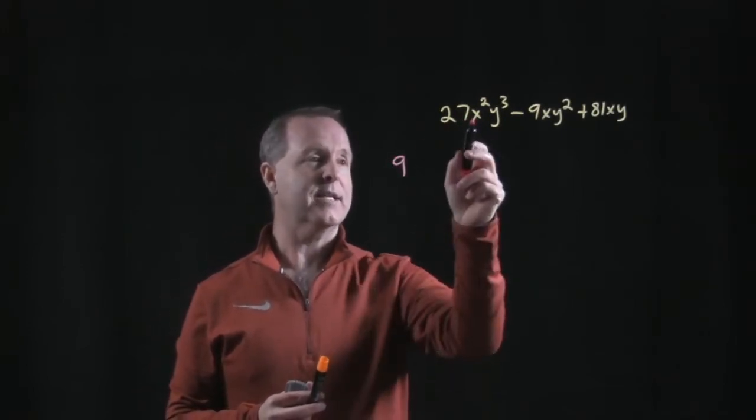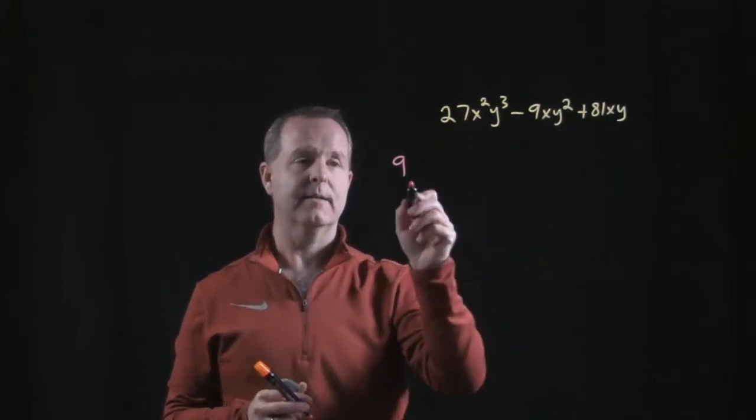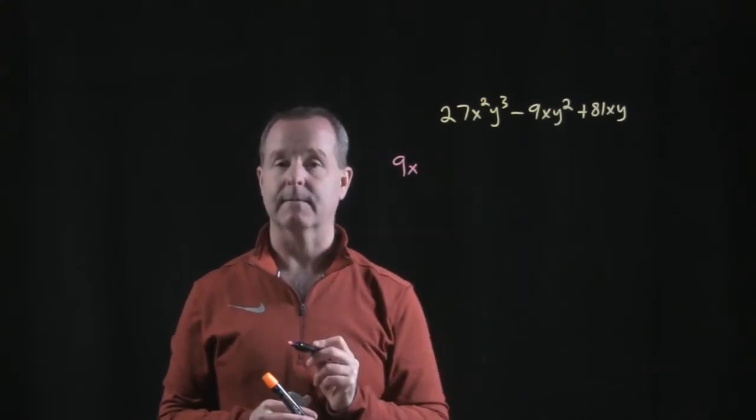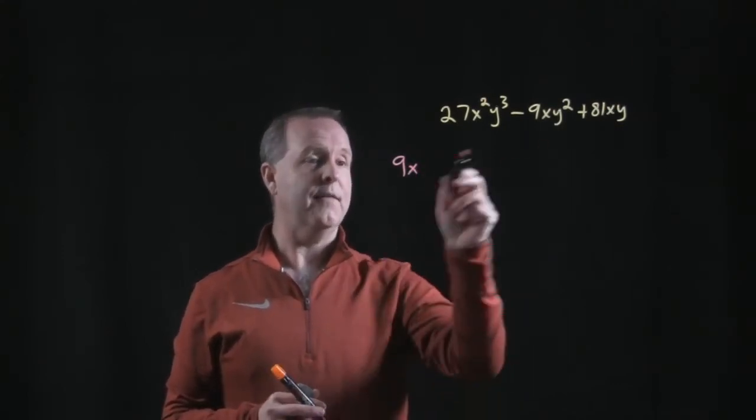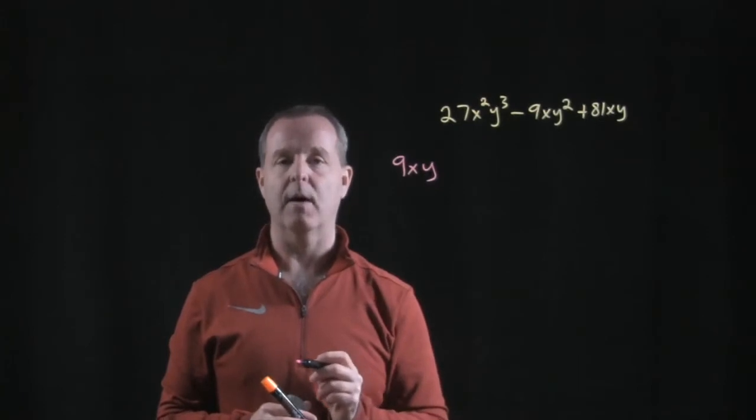Let's look at the x's. x squared, x, and just an x. Looks like it's just going to be an x. That's common in all three terms. And then it looks like a y is the only thing that's common to each of those terms.